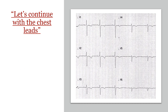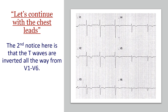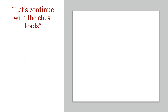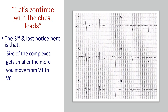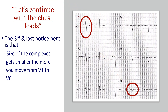The second thing to notice in the chest leads is the T waves — they are all inverted from V1 down to V6, which is abnormal. The third finding is the size of the QRS complexes. Assessing from V1 all the way to V6, they are getting smaller and smaller, as if you're moving away from the heart — V1 bigger than V2, bigger than V3, all the way to V6. Again, clearly abnormal.